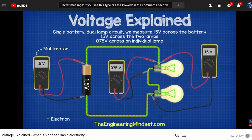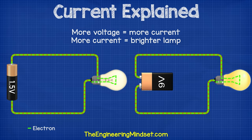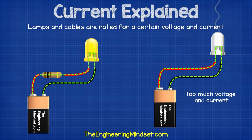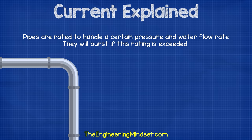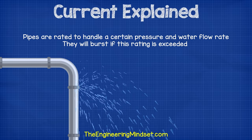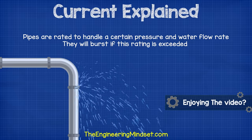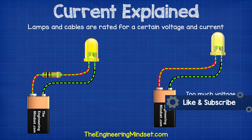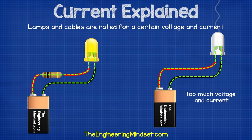We've covered the basics of voltage in detail in our previous video — links in the video description down below. So we need a lot of electrons to flow along a circuit and through our lamps to get them to shine brightly. However, the cable and lamps can only handle a certain amount of electrons passing through them, just like a pipe is rated to handle a certain amount of water or a certain pressure. If it exceeds this, then the pipe will burst. Likewise, if too many electrons pass through the cable or the lamp, then they will just burst or burn out.